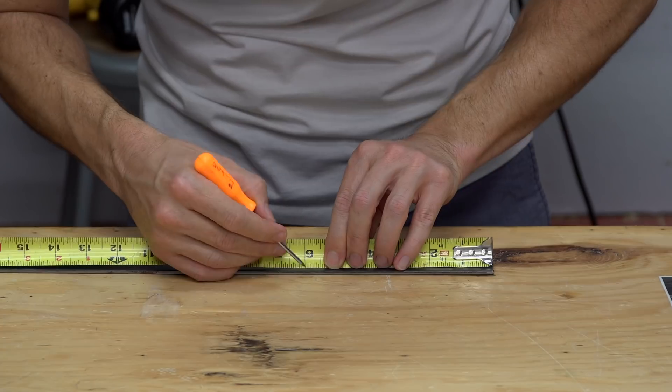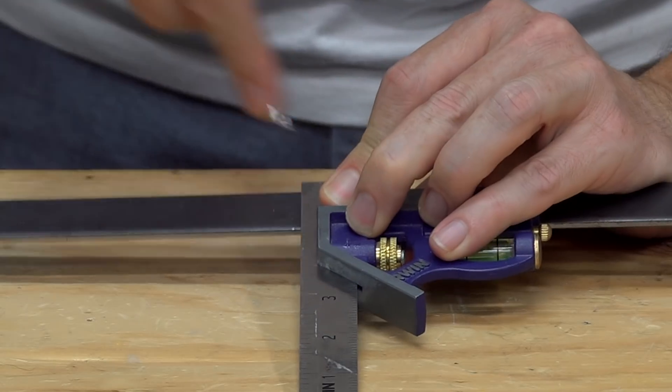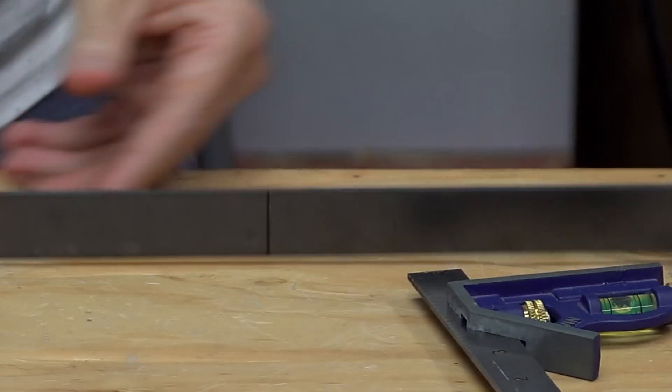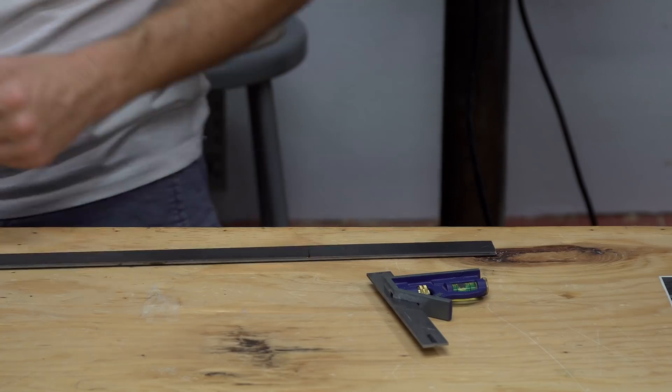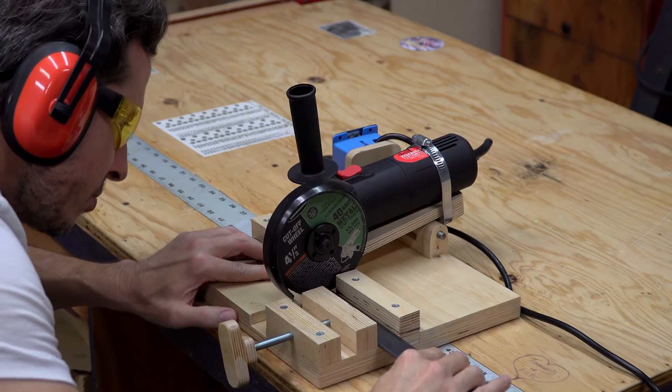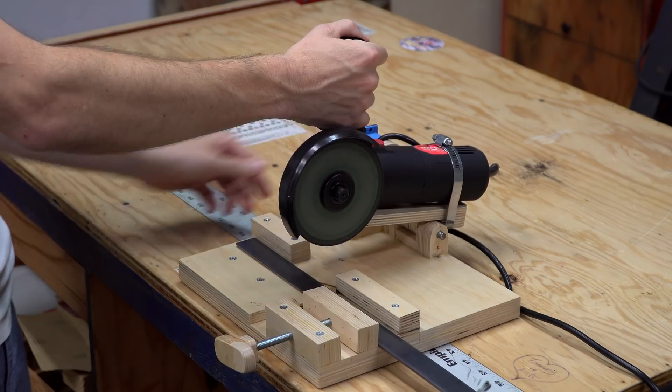While that was drying, I started marking out my piece of steel. This is a 1/8th inch by 1 inch piece of plain steel. It cost me just a few bucks at Home Depot. I cut it down to size using my angle grinder chop saw.